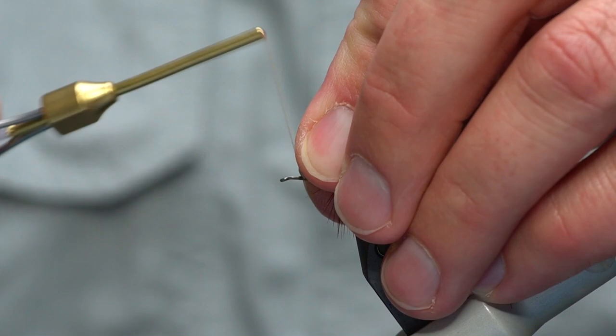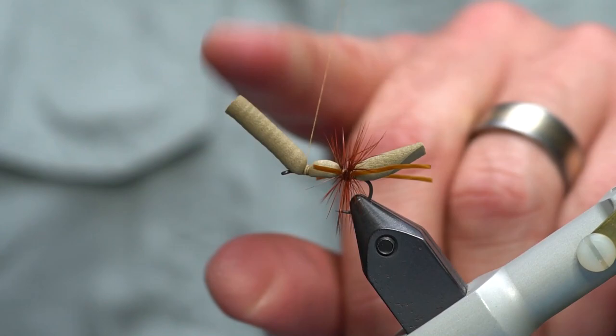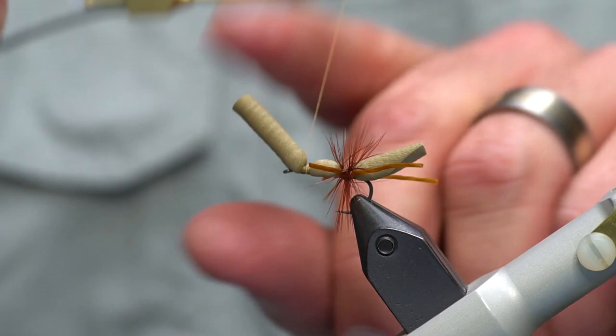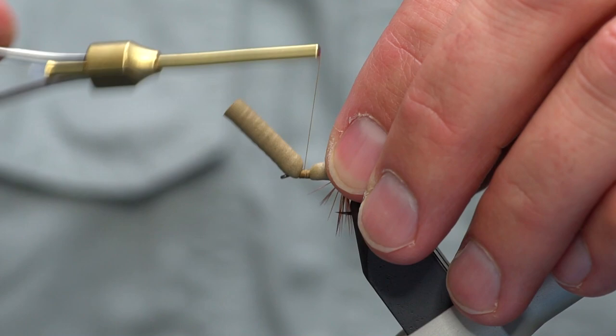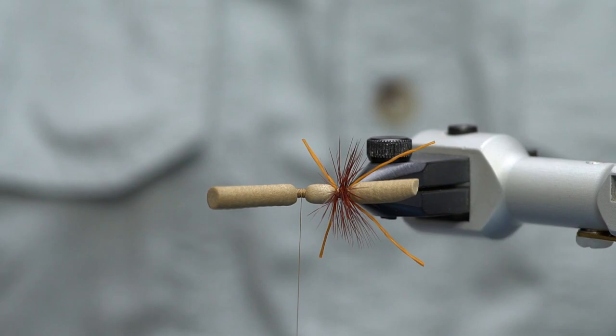Again to make it so it doesn't roll, I'm going to take some wraps just around the shank and then back to our segment again. And I'm going to make this in a little bit more elongated segment also because I'm going to add a wing and some hackle in here. So we'll wrap a nice thread base and we have our foam tied in nice and tight, good to go.